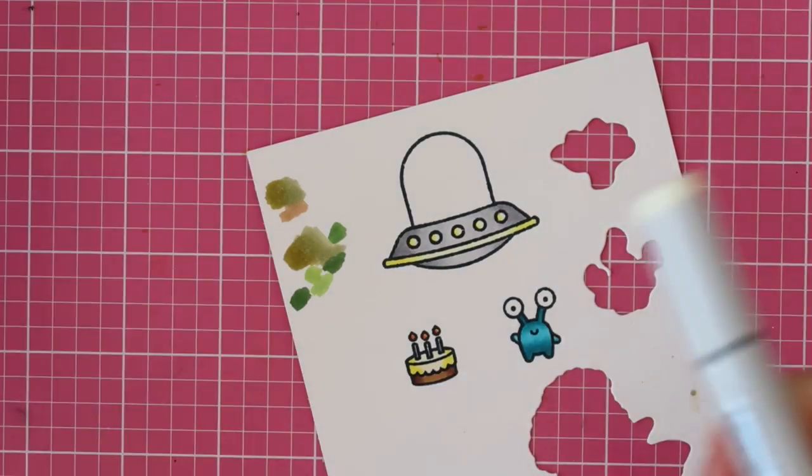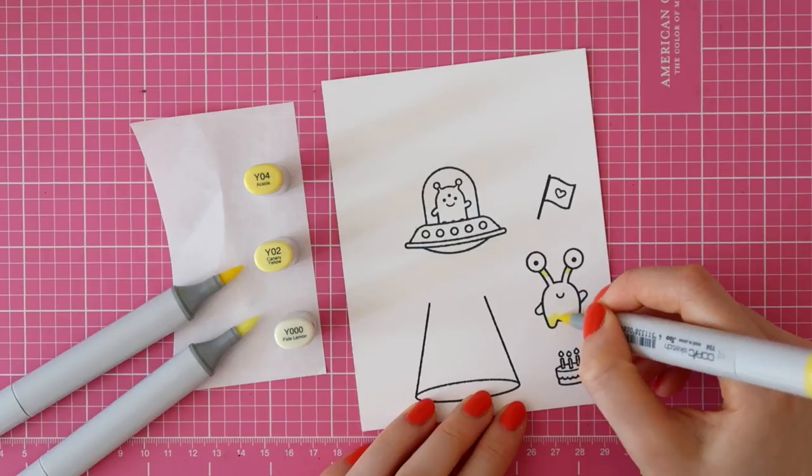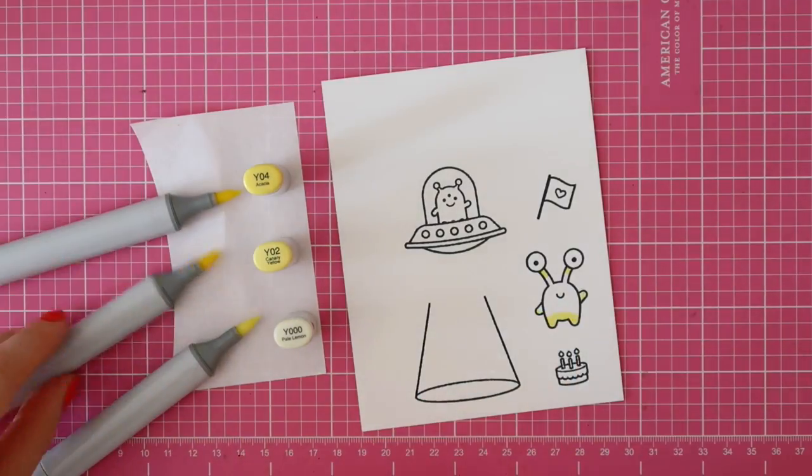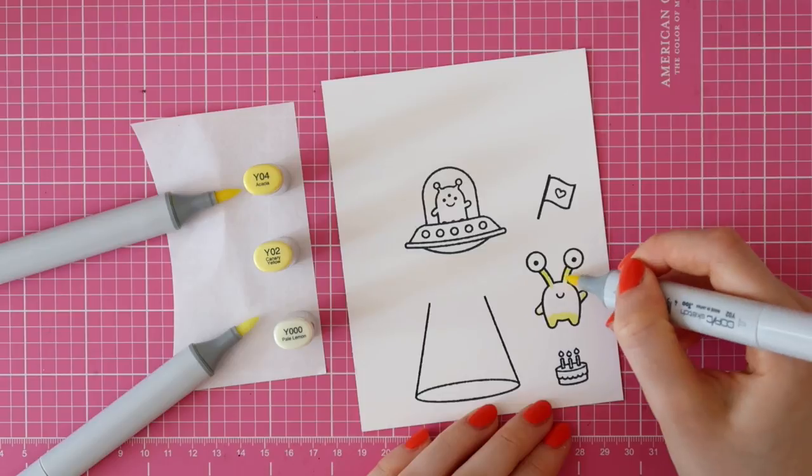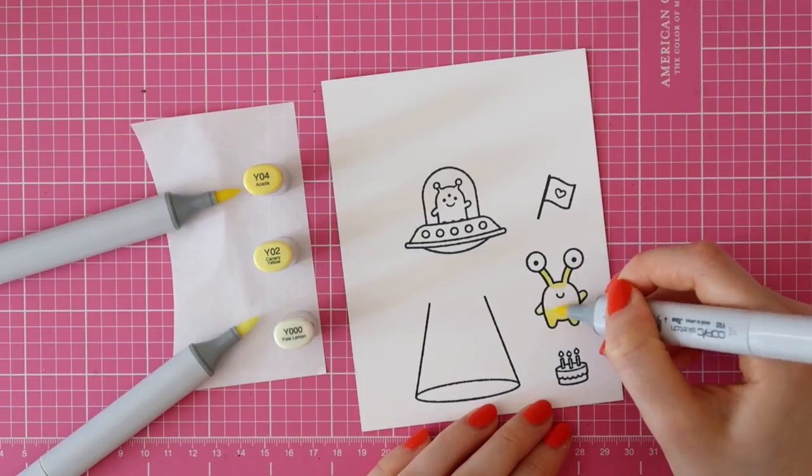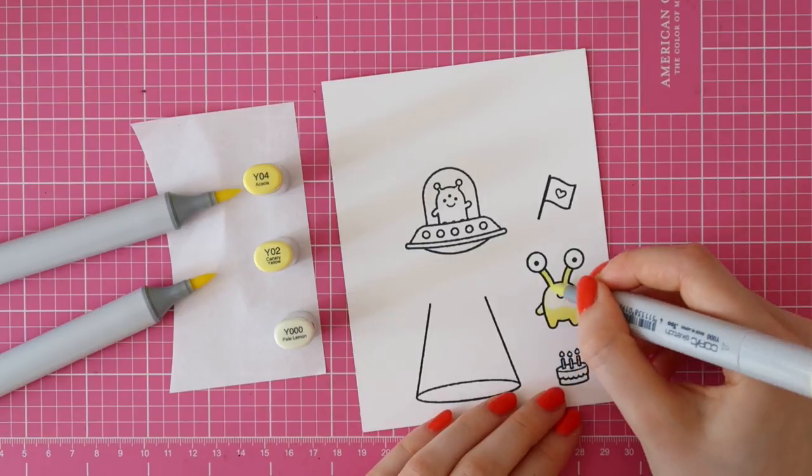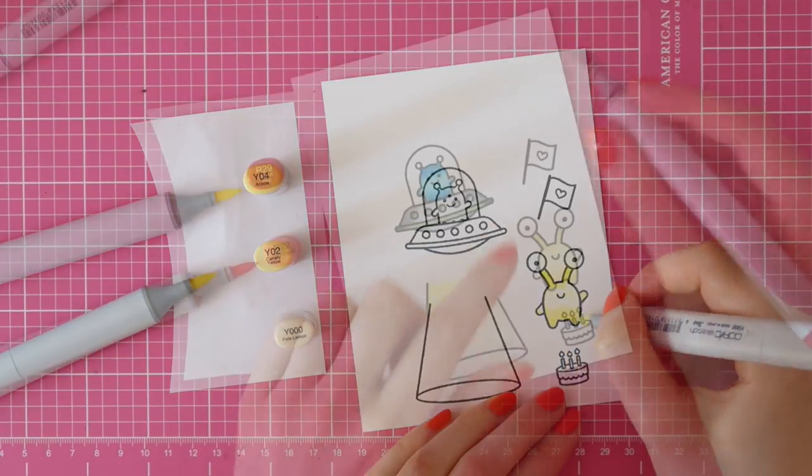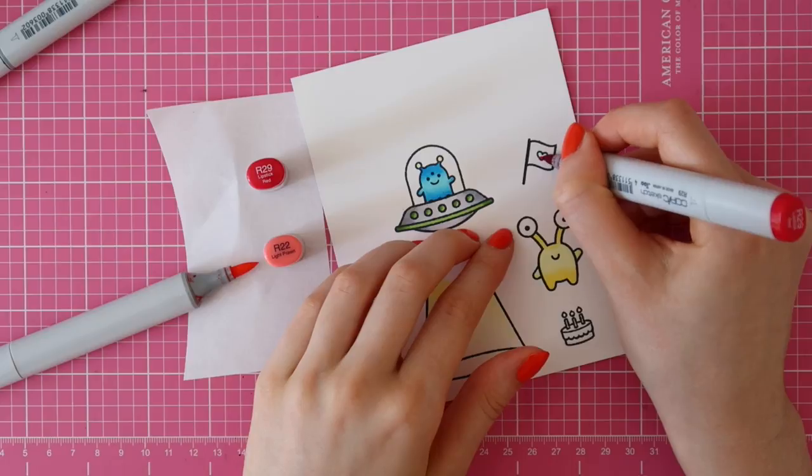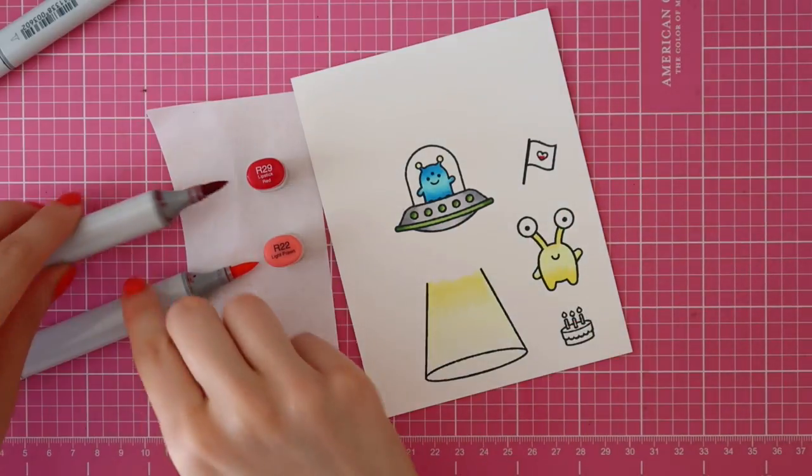Then I'm coloring the larger alien using Y04, Y02 and Y000. At first I stamped a lot more images than I'm actually going to be using for my finished card. But when I started making this card, I just had a totally different design in my head. And then while I was making it, I switched it up.